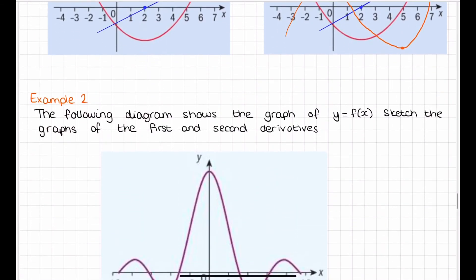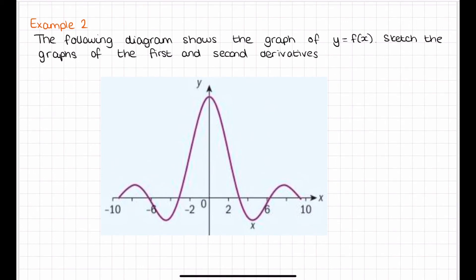Now let's look at another example. We have this graph and we want to sketch the first and second derivatives. This is our function. Looking at where the maximum and minimum points are: we have a maximum, then a minimum, then a maximum, then a minimum, then a maximum. Remember, the gradient at those turning points is zero, which means for the gradient graph they need to be on the x-intercept. So those turning points will move to the x-axis.